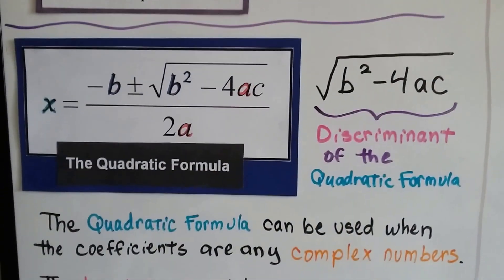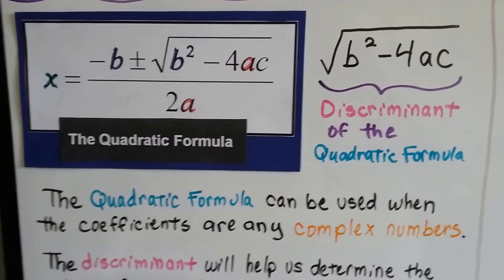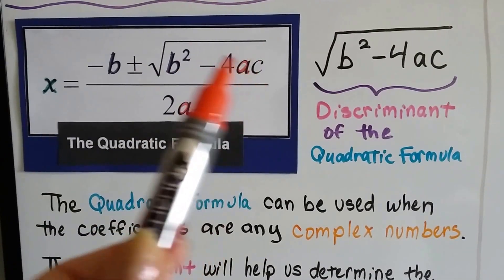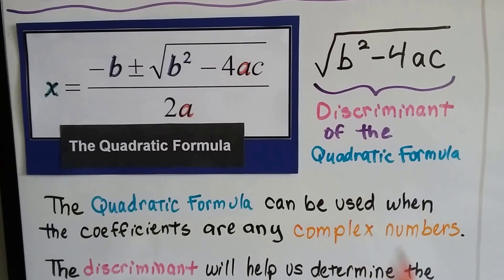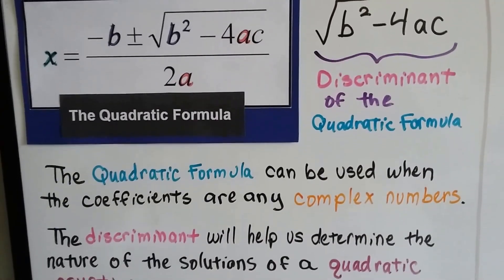So we did this in the last video, we did the quadratic formula. And this part right here under the radical sign, that's called the discriminant. And it's the discriminant of the quadratic formula.